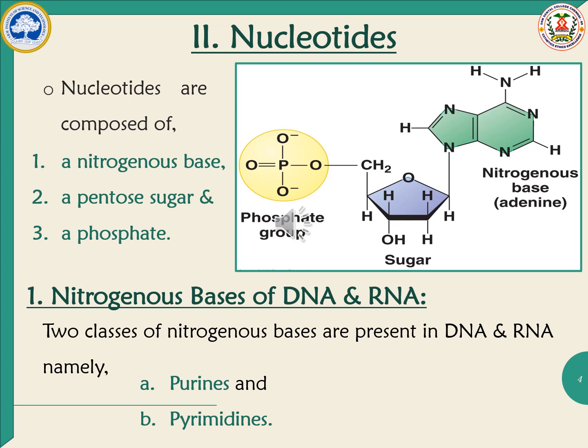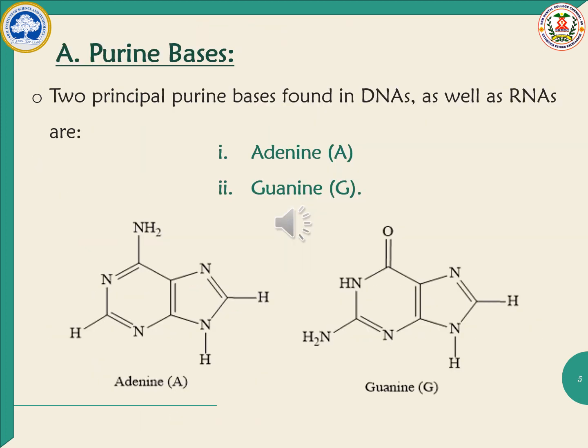First, we look at the nitrogenous bases of DNA and RNA. The nitrogenous base is of two types: purine and pyrimidine. There are two principal purine bases found in both DNA and RNA: adenine and guanine. In your slide you can see the structure of adenine on the left and guanine on the right. These can be asked in your MCQs regarding purine bases and nucleotide composition.